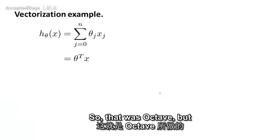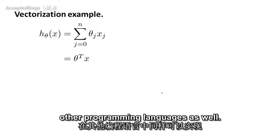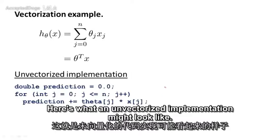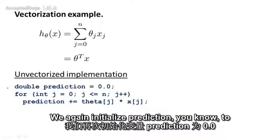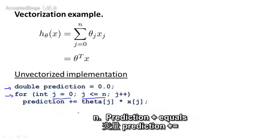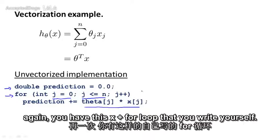So that was Octave, but the issue of vectorization applies to other programming languages as well. Let's look at an example in C++. Here's what an unvectorized implementation might look like. We again initialize prediction to 0.0, and then we now have a for loop for j equals 0 up to n. Prediction plus equals theta j times xj. Where again, you have this explicit for loop that you write yourself.